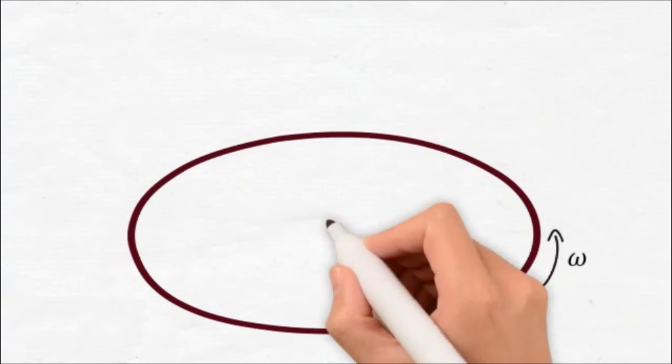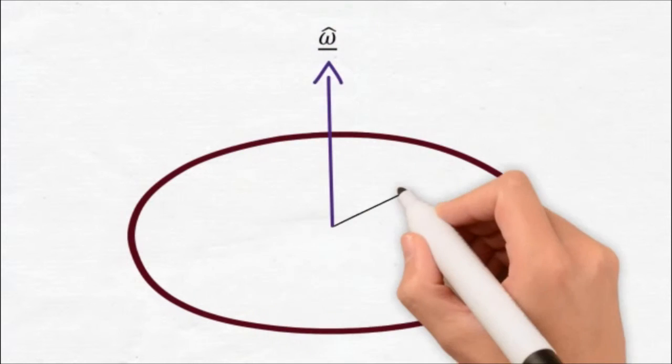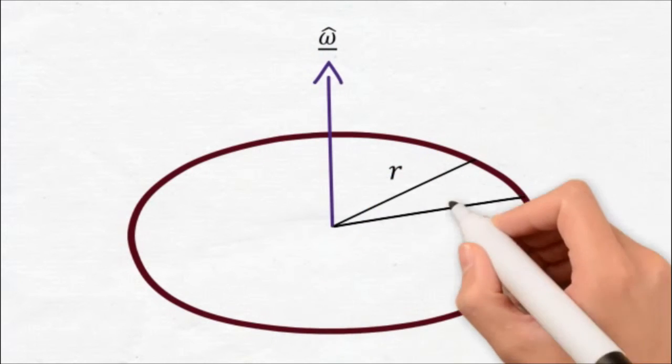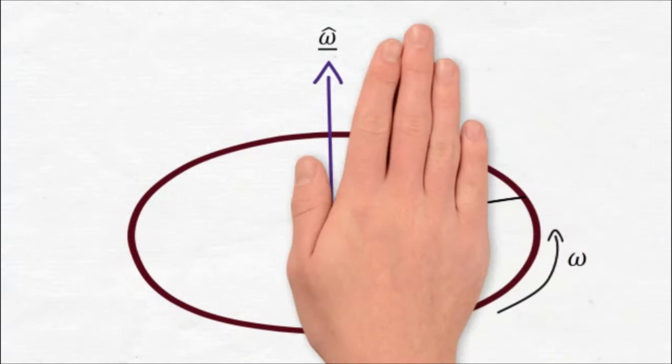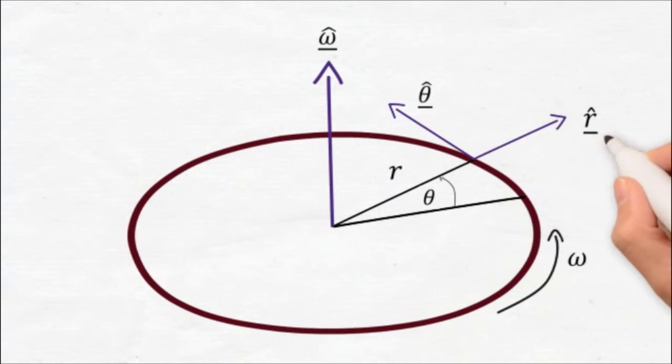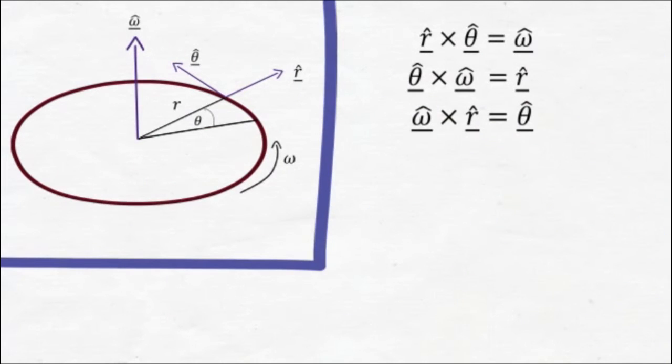Let's imagine that you are sitting on a merry-go-round rotating around the omega hat axis, r distance from that axis, and with angular displacement theta. We can treat these three unit vectors as orthogonal i, j, k vectors we are familiar with, and apply similar rules of the cross product to them.